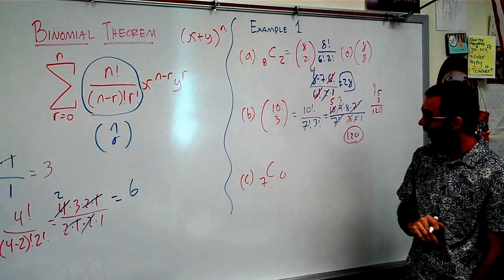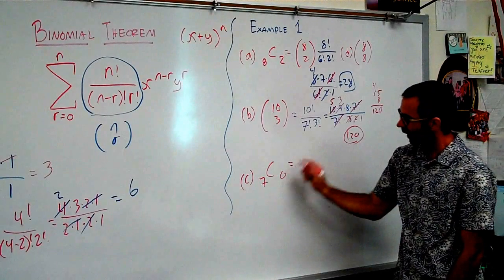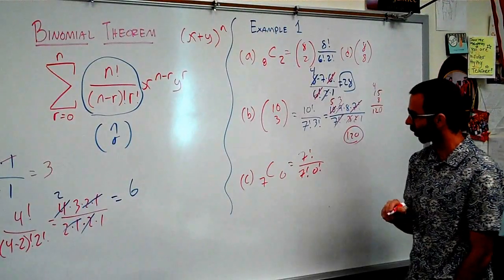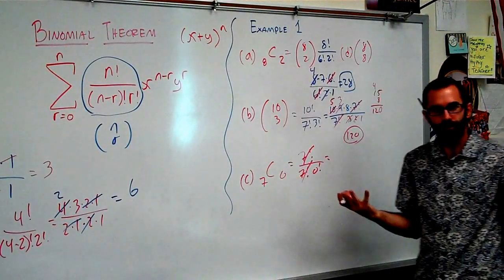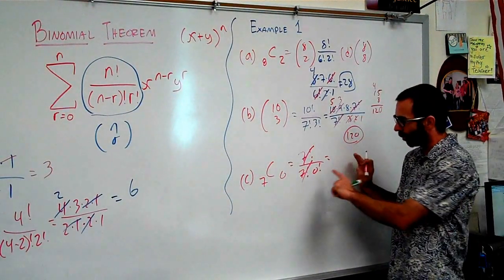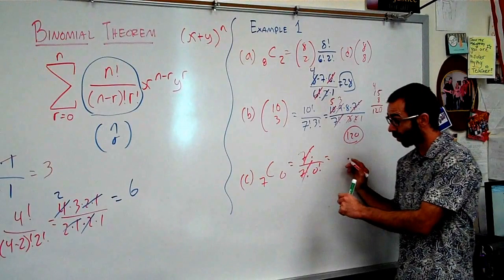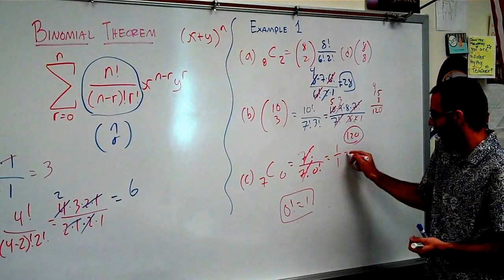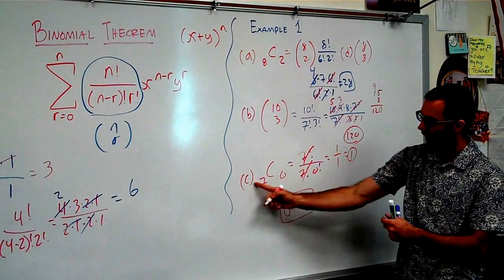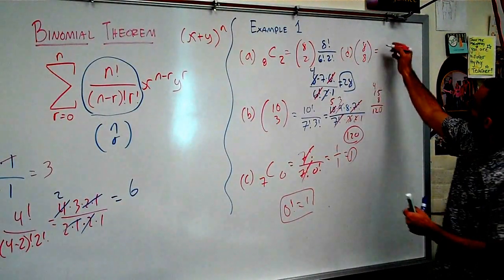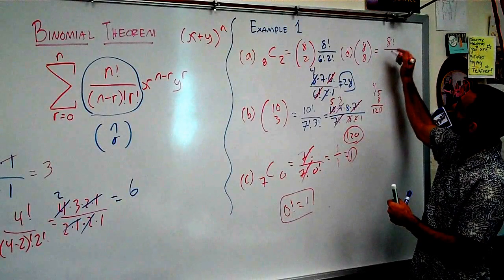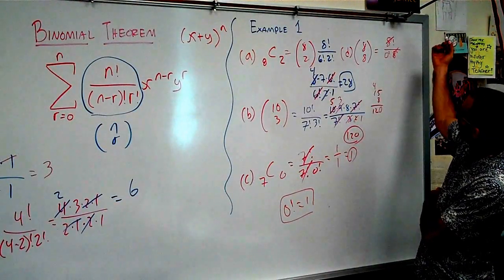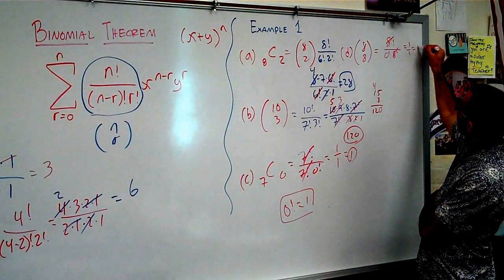Let's do these last two examples. 7 choose 0: 7 factorial over (7 minus 0) factorial times 0 factorial, which is 7 factorial over 7 factorial times 0 factorial. Those cross out. We learned back in section 8.1 or 8.2 that 0 factorial equals 1. So that would be 1 over 1, which is just 1. And lastly, 8 choose 8: 8 factorial over (8 minus 8) factorial times 8 factorial, which is 0 factorial times 8 factorial. These cross out again, giving us 1 over 1 equals 1. Good practice on knowing how to use n choose r for our coefficients.